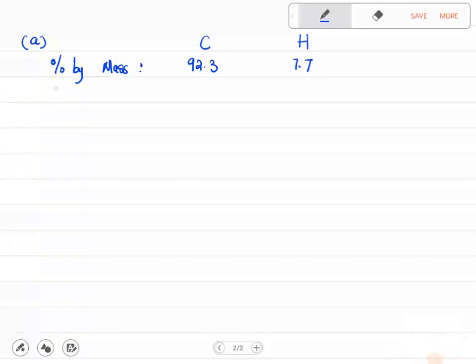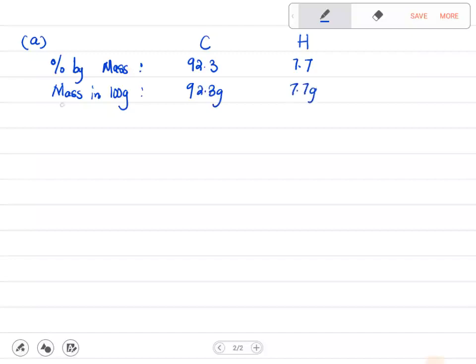The next thing is we need to write the mass in 100 grams. Remember this is mass in percentages, which is just like out of 100. Let's write the same percentage but in terms of mass. This would be 92.3 grams and this would be 7.7 grams.